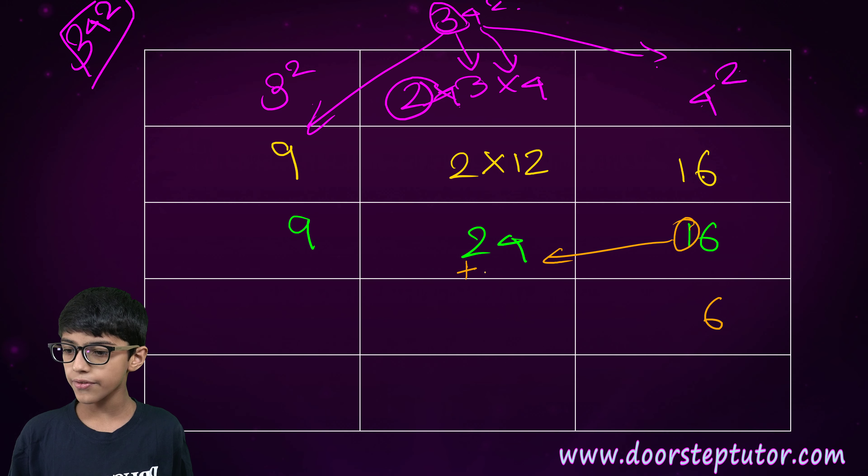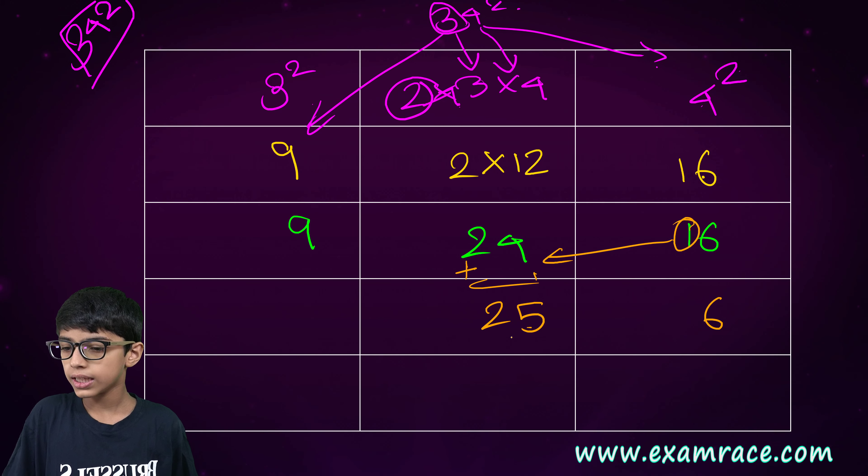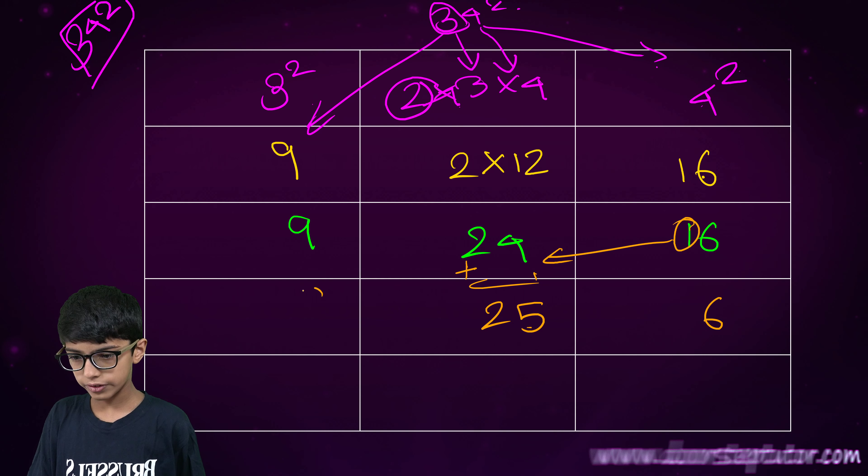So, we will add one to it. Twenty-five. And nine will come as it is.